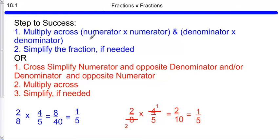We've got two different ways that you can do this same problem. Number 1, you can multiply straight across. Numerator times numerator equals my numerator. So we have 2 times 4 equals 8. Denominator times denominator, 8 times 5 equals 40. And then simplify the fraction if needed. The greatest common factor of 8 and 40 is 8. So that's why I divided by 8 and came up with 1 fifth.